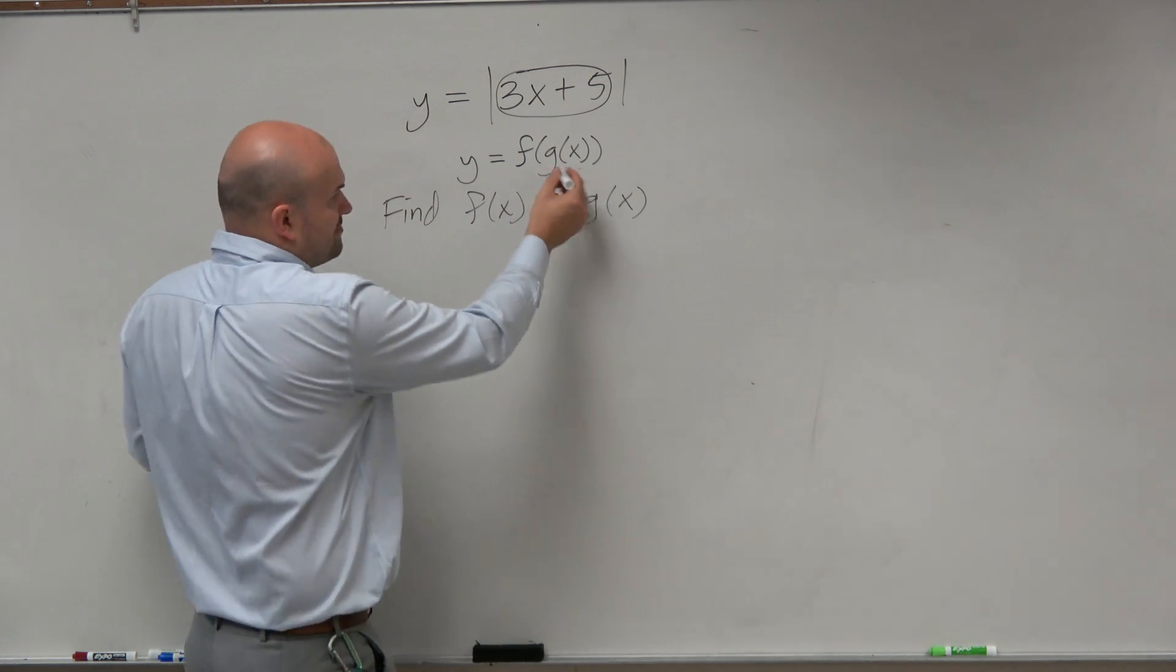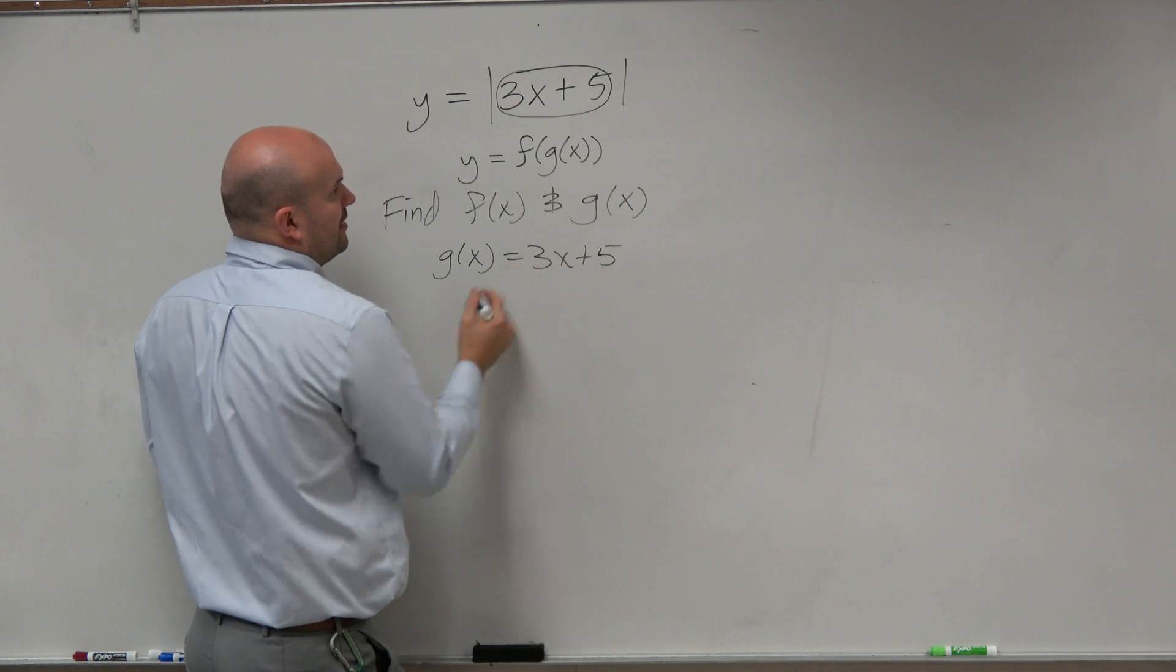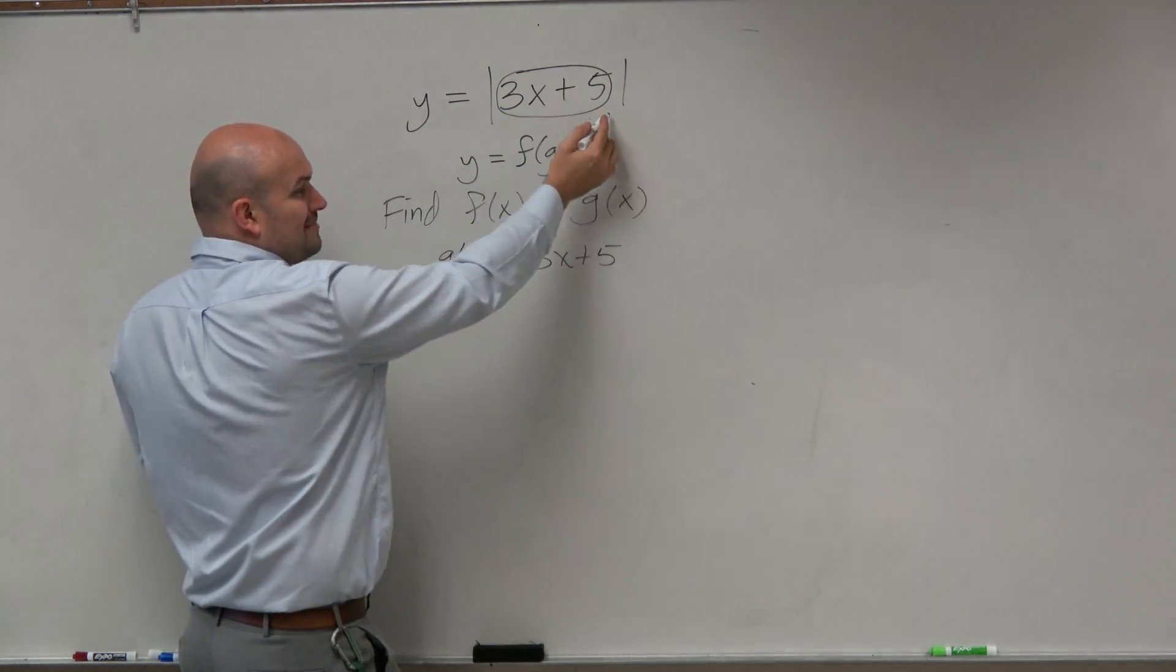Since that's supposed to be the one that's inside, that would be g of x, 3x plus 5. And then what is it inside of? It's inside absolute values.